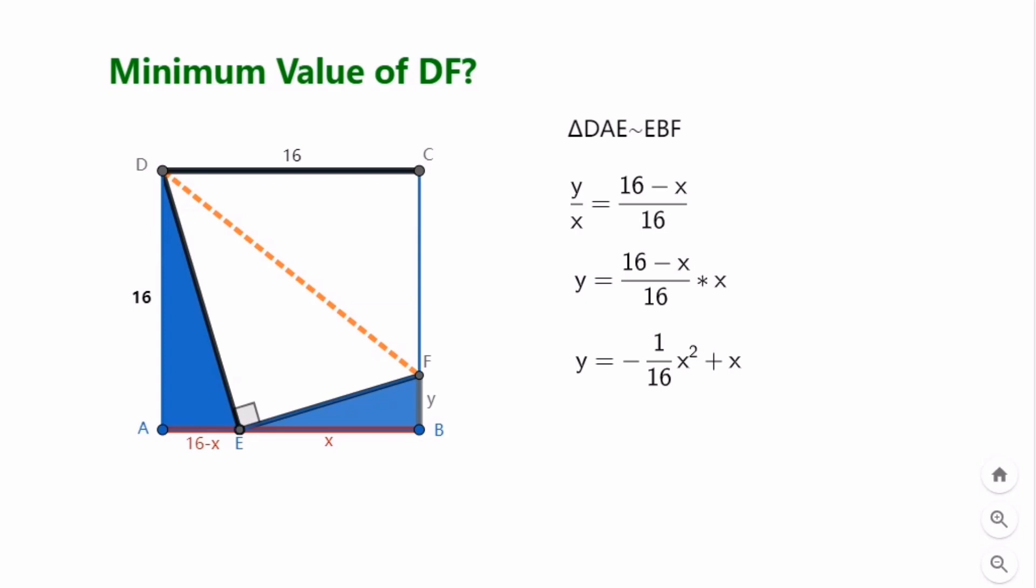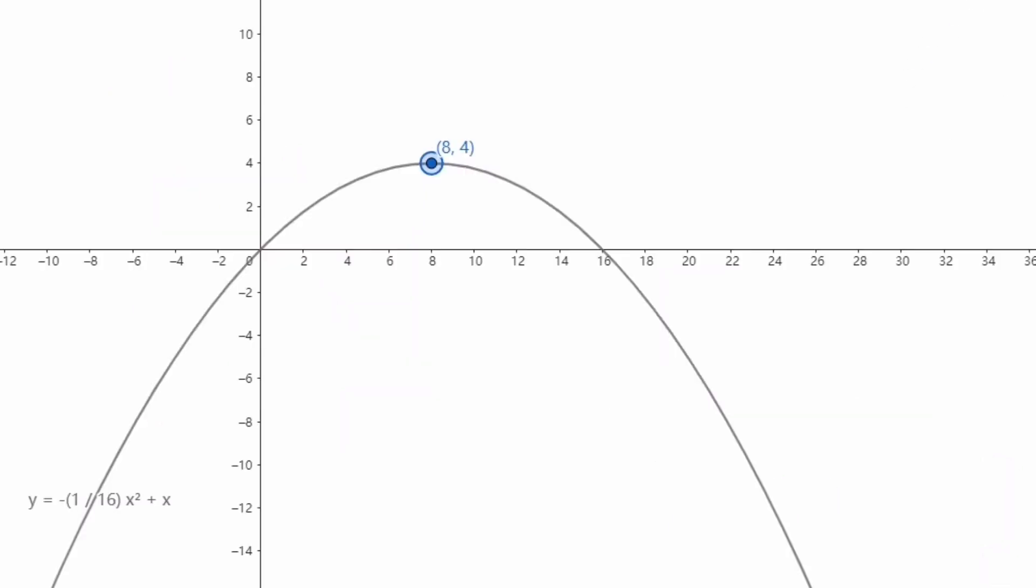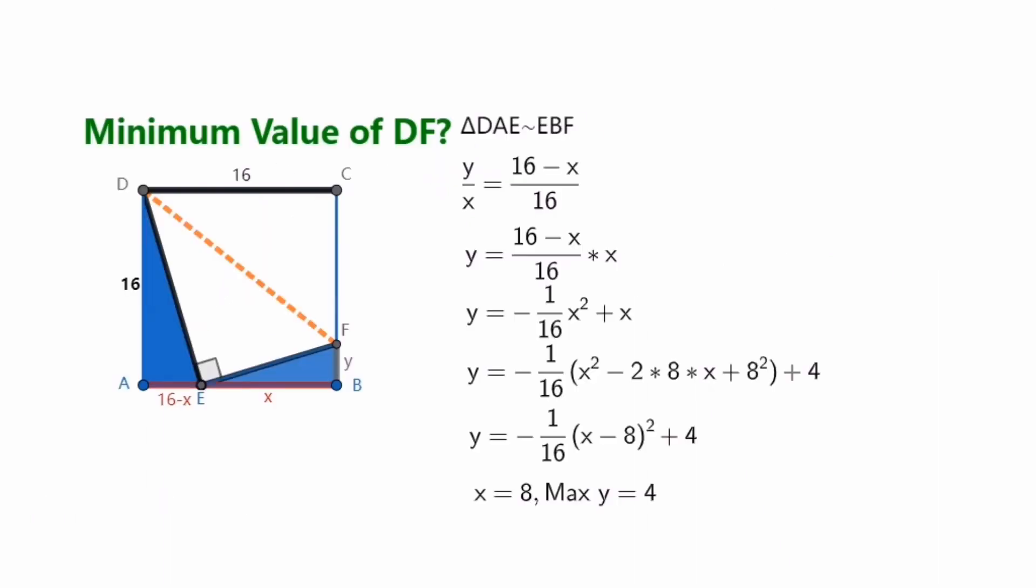Now let's take the quadratic function and find the maximum. We go ahead. Y is equal to negative 1/16th times X minus 8 squared plus 4. So only if X minus 8 squared is equal to 0, the Y value is at maximum value of 4. We can also look at it in terms of the curve of the quadratic function in the coordinate system. The vertex of this curve is X equals 8 and Y equals 4. We get that at X is equal to 8, maximum value Y is equal to 4.